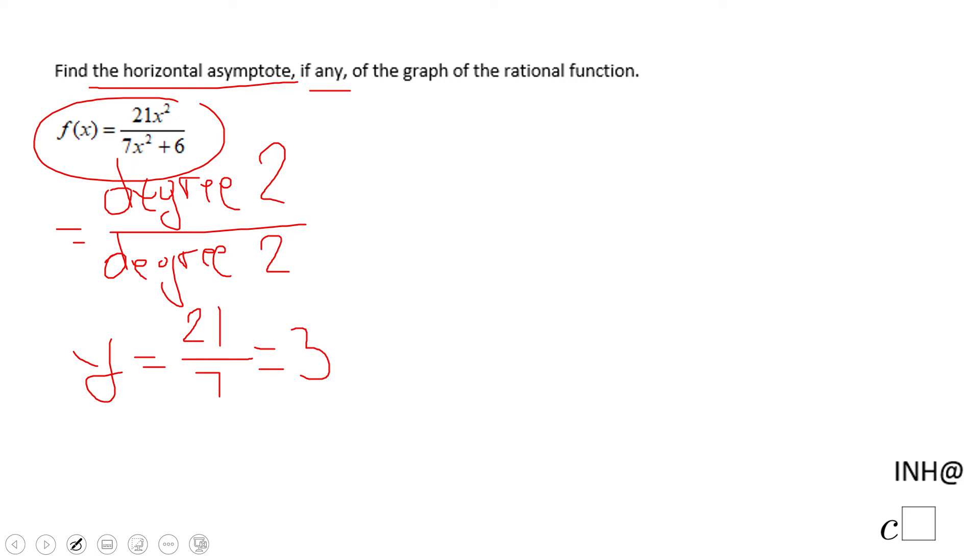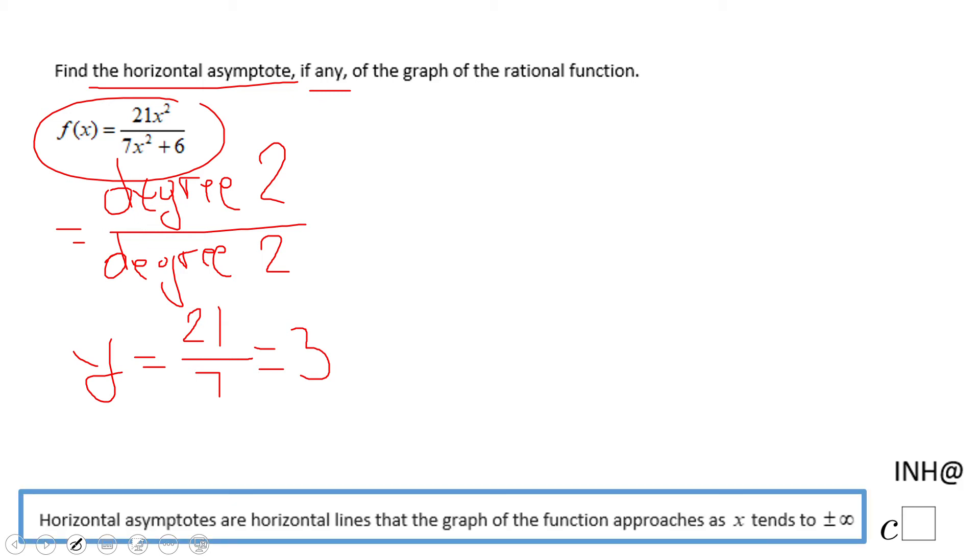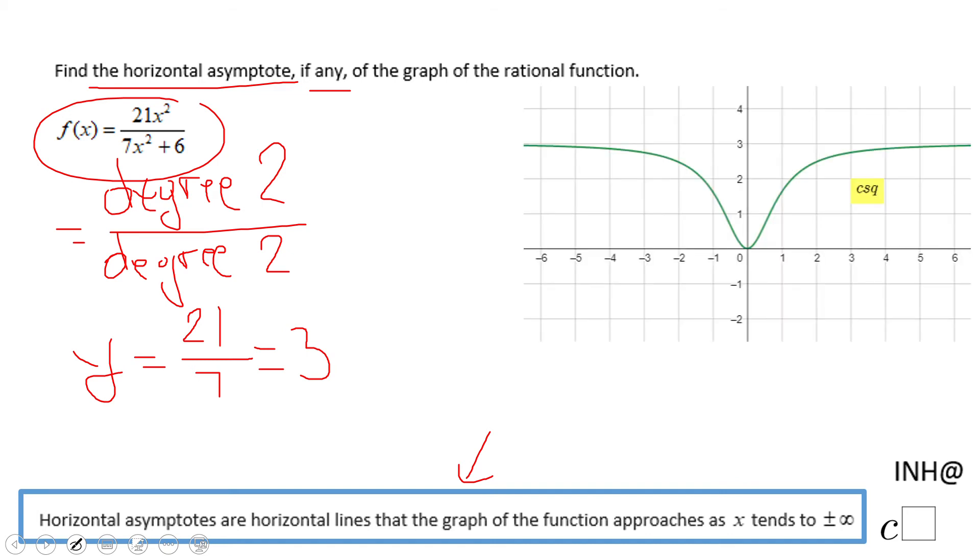y equals 3 is this horizontal asymptote. And I put here a way to understand this horizontal asymptote. It means the horizontal asymptote are those lines that the function approaches when x approaches infinity or negative infinity. And you can see that in the graph.